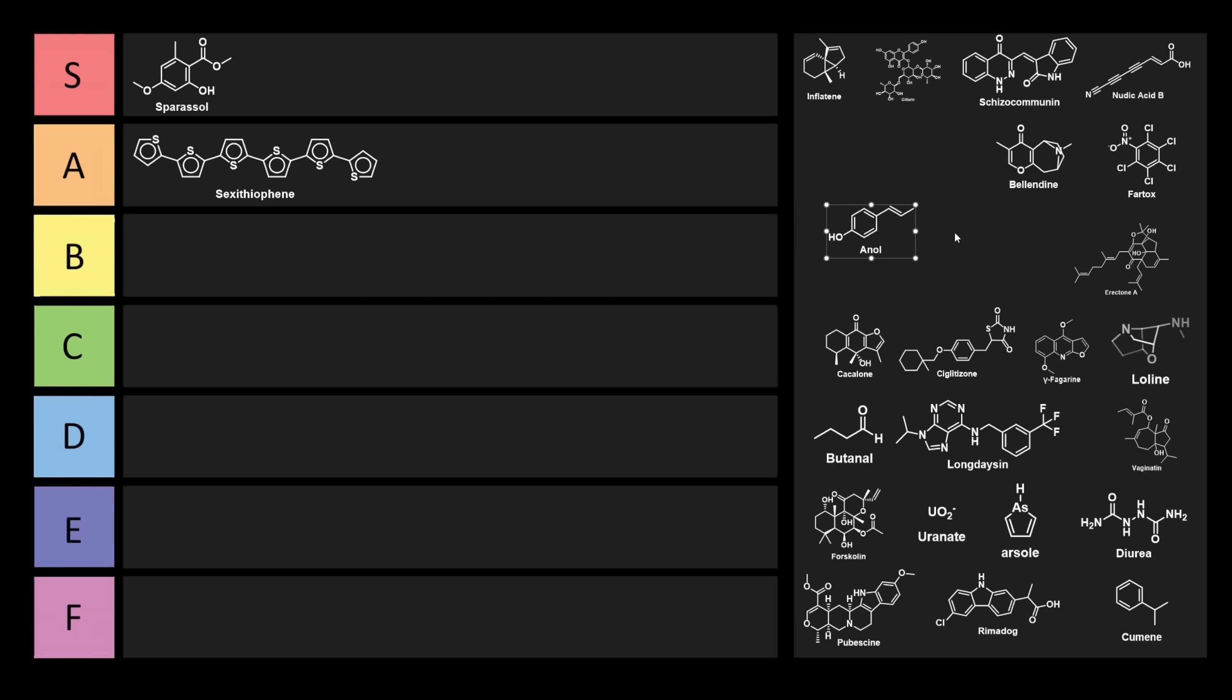Now this one here is called anol. And anol is an interesting molecule. You might not have heard of anol before. But it actually is formed through the demethylation of anethyl. And anethyl is a component of anise and fennel. Anol is definitely another unfortunate one. So that one can go right into S tier, even though it starts with an A.